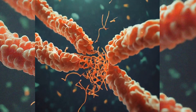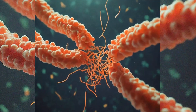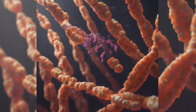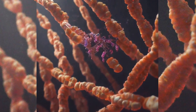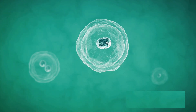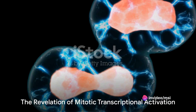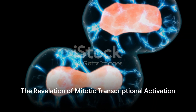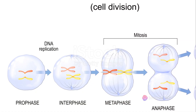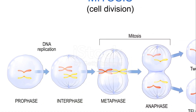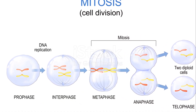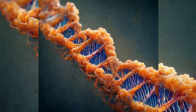POL2 and other transcription factors simply detach from the chromosome, allowing it to duplicate. But, as it turns out, the story is far more intricate than that. This groundbreaking research, which graced the cover of Molecular Cell, revealed that a series of genes within the genome actually retain paused POL2 during mitosis.